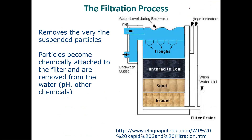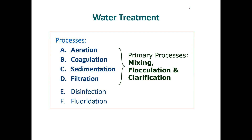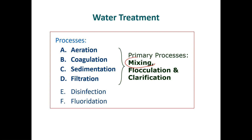So those are the primary processes — particularly coagulation, sedimentation, and filtration. Sometimes these things are all happening kind of simultaneously. Mixing and flocculation are part of this. Flocculation is the slow mixing of the coagulant, and we don't want to mix too fast because we want things to have a chance to settle out while they're flocculating.